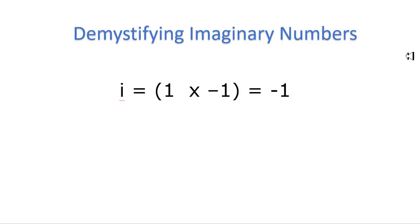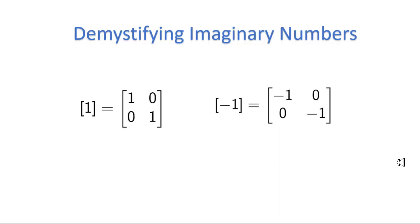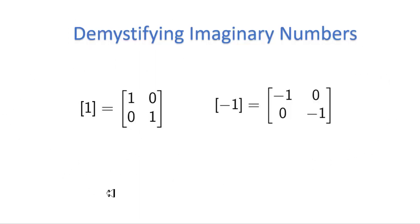This is where the two-dimensional numbers that I talked about in my previous video come into play. In two-dimensional numbers, one is represented as a matrix with ones on the forward diagonal, and negative one has negative ones on the forward diagonal. If you do the matrix math from my previous video and square the one matrix, you get the one matrix. And if you take the negative one matrix and square it, you also get the one matrix. So in the two-dimensional number system, one squared equals one, and negative one squared also equals one.